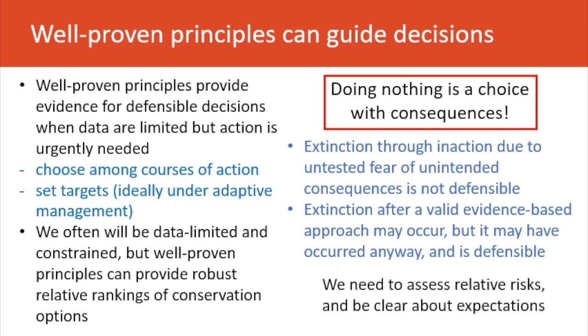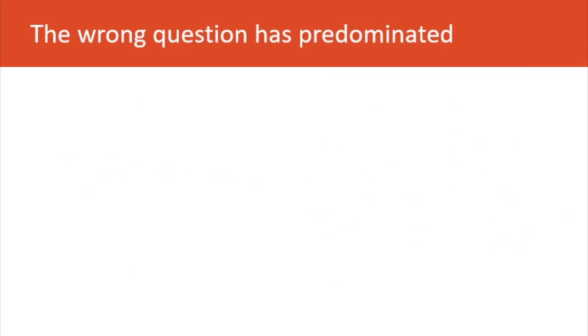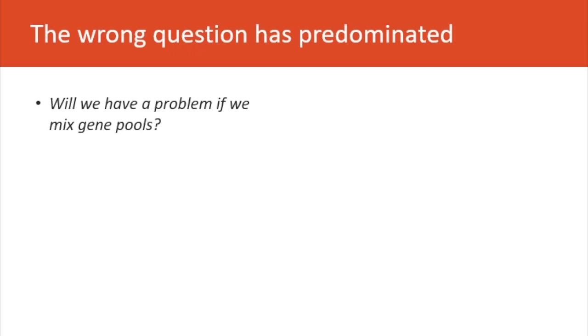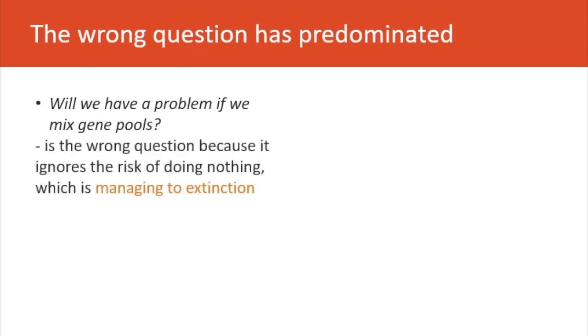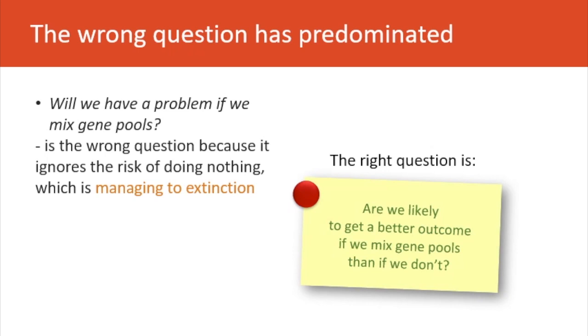We need to be able to assess the relative risks and be clear about expectations. In considering genetic management options, the wrong question has often predominated — that is: will we have a problem if we mix gene pools? It's the wrong question because it ignores the risk of doing nothing, which is managing to extinction. Instead, the right question is: are we likely to get a better outcome if we mix gene pools than if we don't? Asking this correct question, answering it, and acting on the decision is best conducted by co-design between researchers and managers.